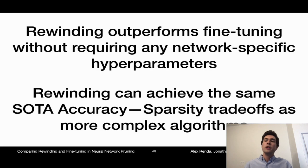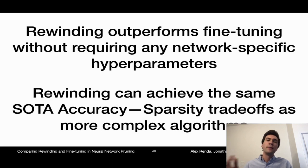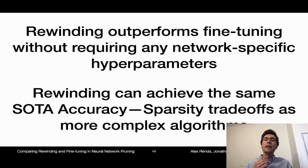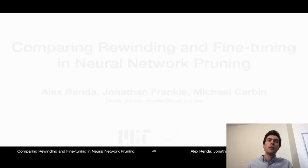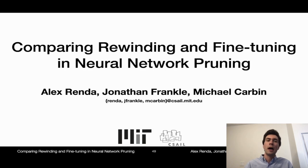In conclusion, we find that both rewinding techniques outperform fine-tuning without requiring any network-specific hyperparameters — you just rewind to somewhere within the rewinding safe zone. Our results go further: rewinding can achieve the same state-of-the-art accuracy versus sparsity trade-offs as much more complicated algorithms requiring significant manual hyperparameter tuning or reinforcement learning to pick pruning heuristics. Thanks so much for your time — I'm happy to take any questions during the virtual poster session or by email.